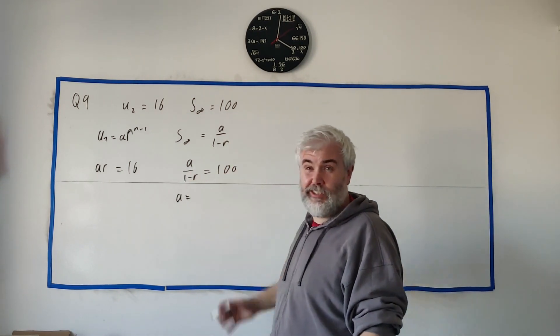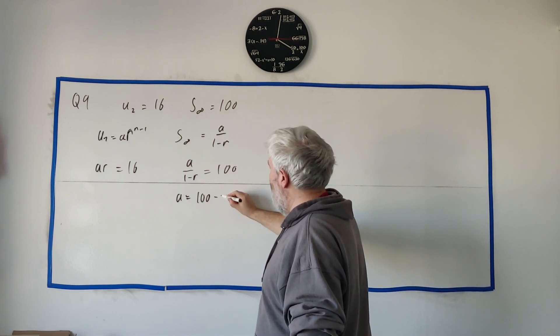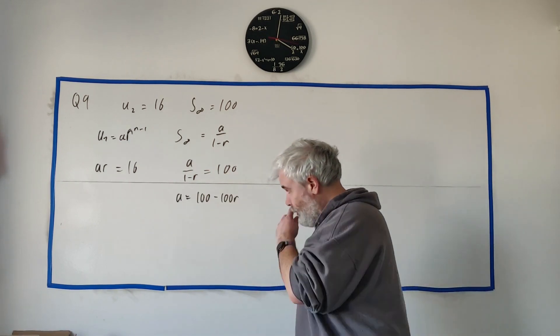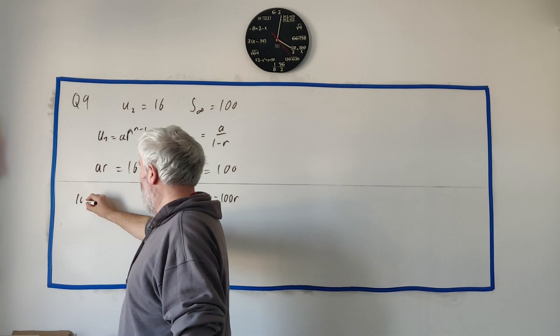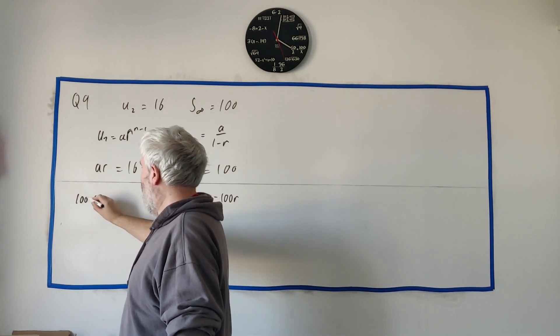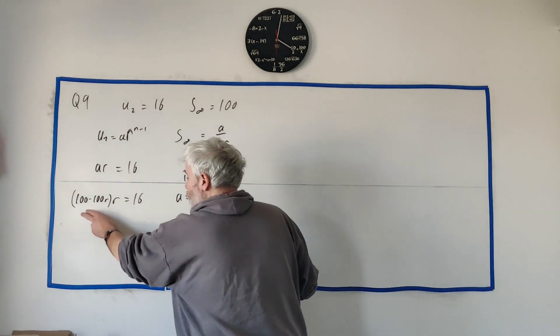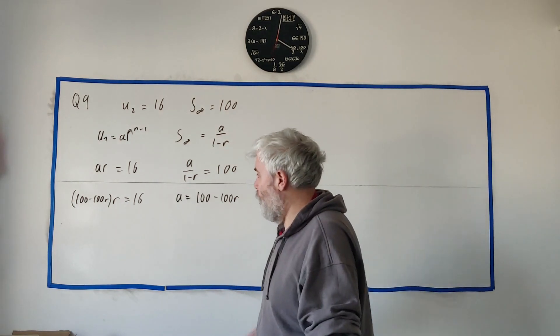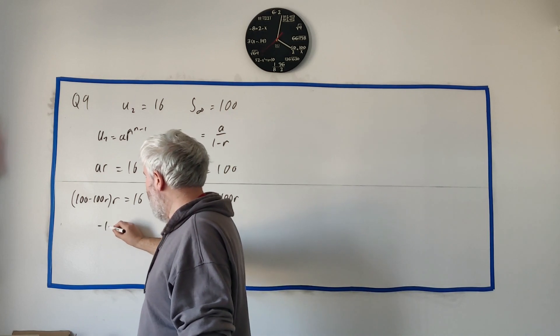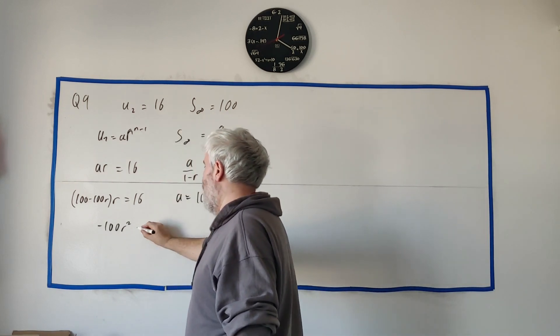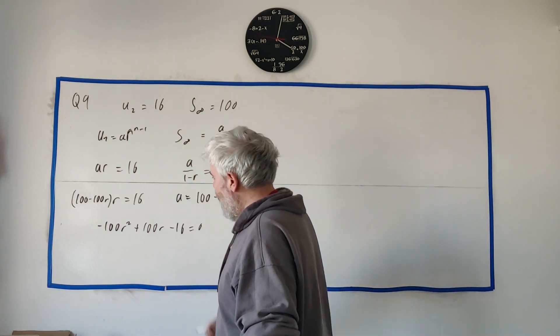a is equal to 100 minus 100r. And I'm going to go ahead and put this into this one here. So I get (100 - 100r)r is equal to 16. We have one equation with one unknown. We can go ahead and try and solve this. We get a quadratic out. r squared comes out of this, so -100r^2 + 100r. And let's move that over, we get minus 16 equals 0.